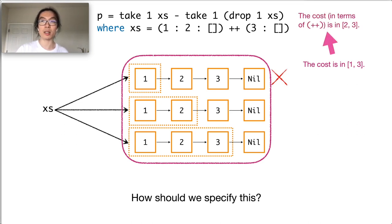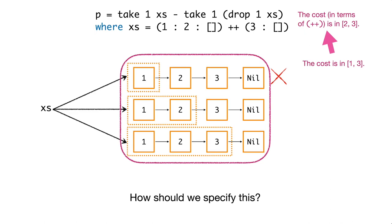So we can eliminate the first possibility. And then we conclude that the cost of p in terms of append is in the range of 2 and 3. But the function p never requires the third cell of the list xs, so the cost should never be 3.